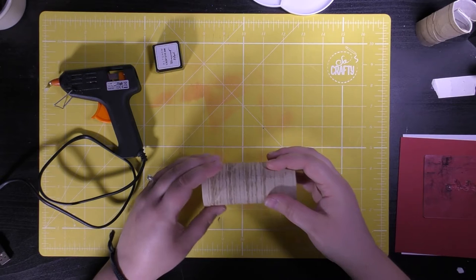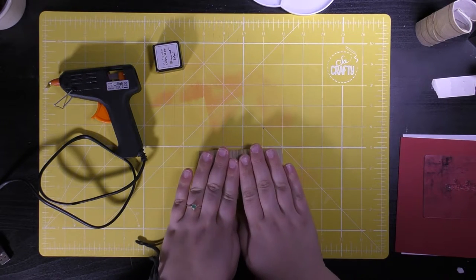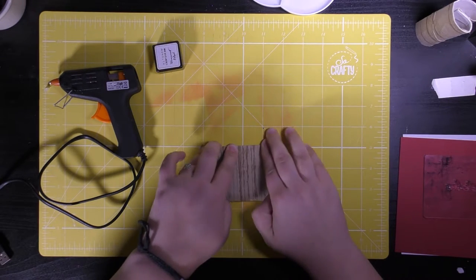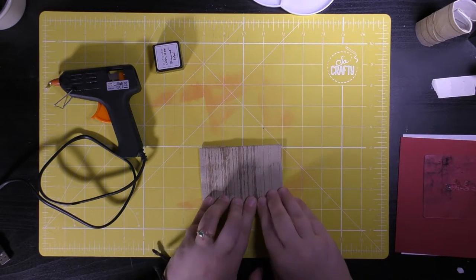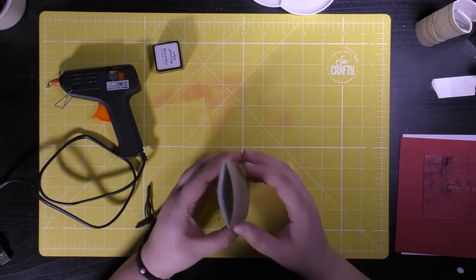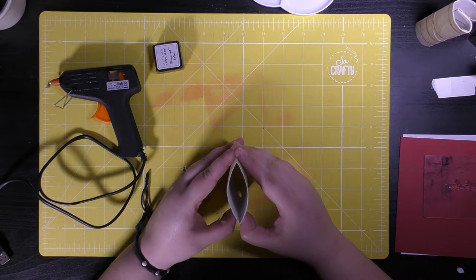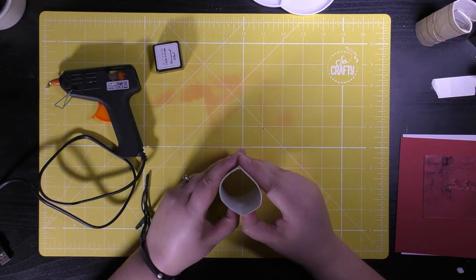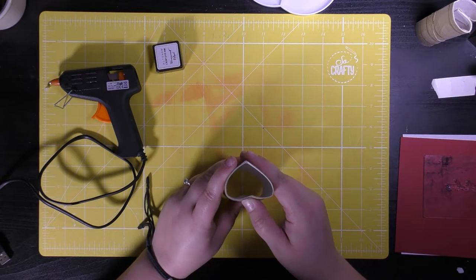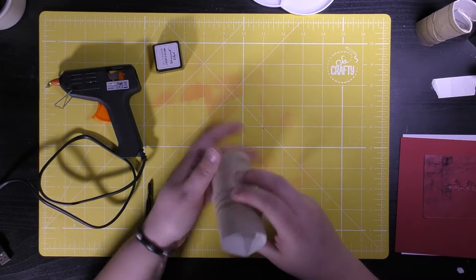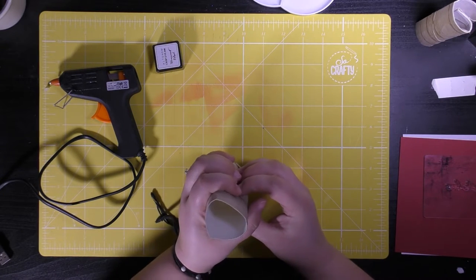Take the toilet roll and squash it down flat and reinforce the folds that you've made just by pressing on them firmly. So what we need to do is just encourage one of the folds down into the center of the toilet roll and you'll start to see a heart shaped form. Just do it gently so that the curves are nice and smooth and not angular.